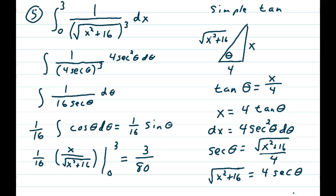Bring back from my picture what sin θ is. In that picture, sin θ would be the opposite over the hypotenuse, which is x/√(x²+16). Put in our numbers, 0 and 3, and we get 3/80.